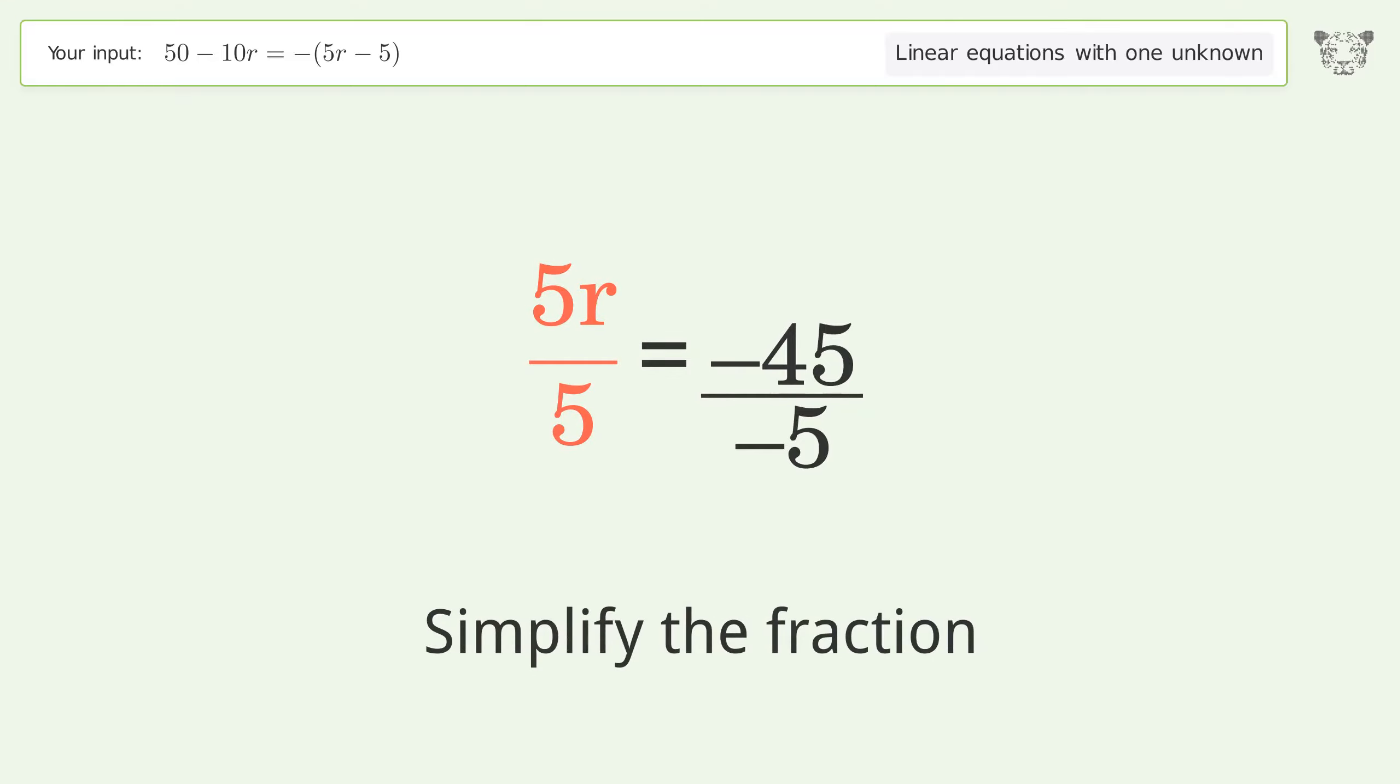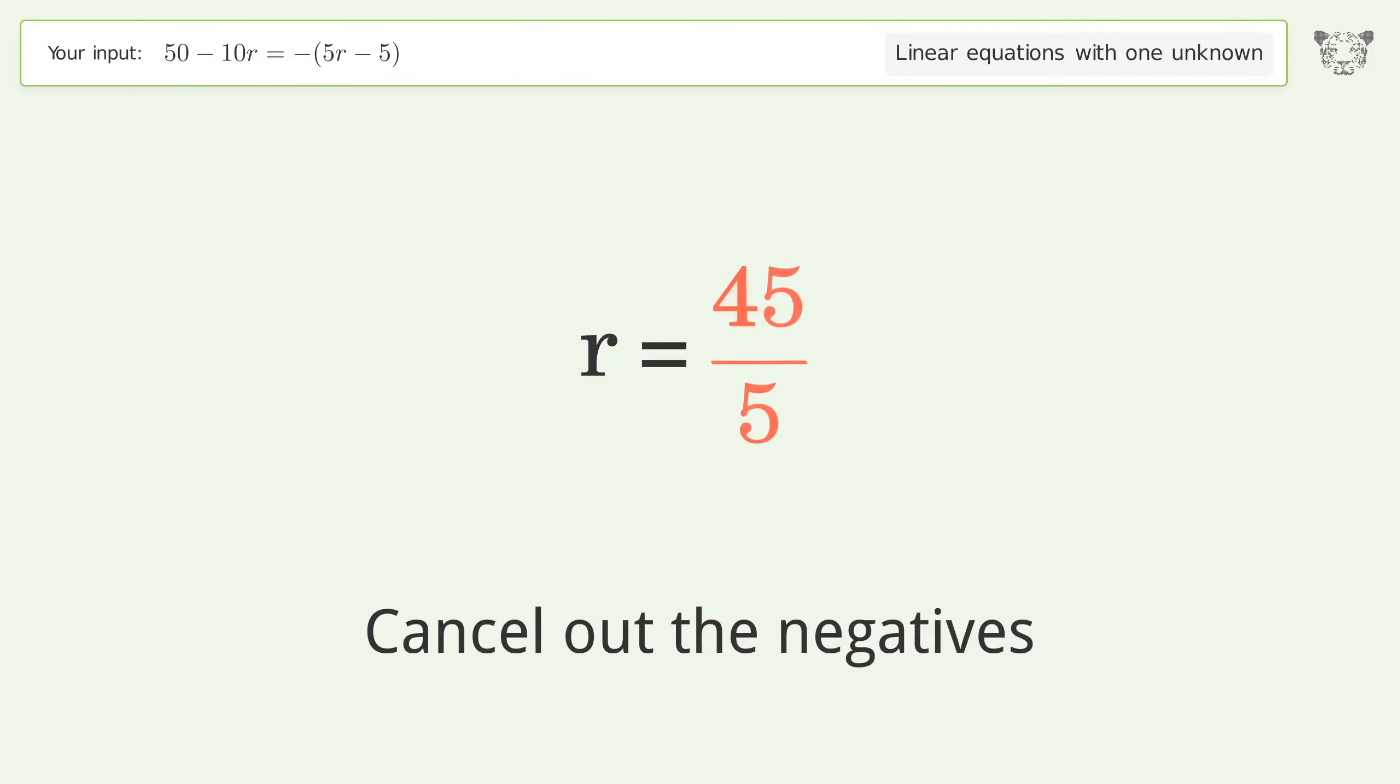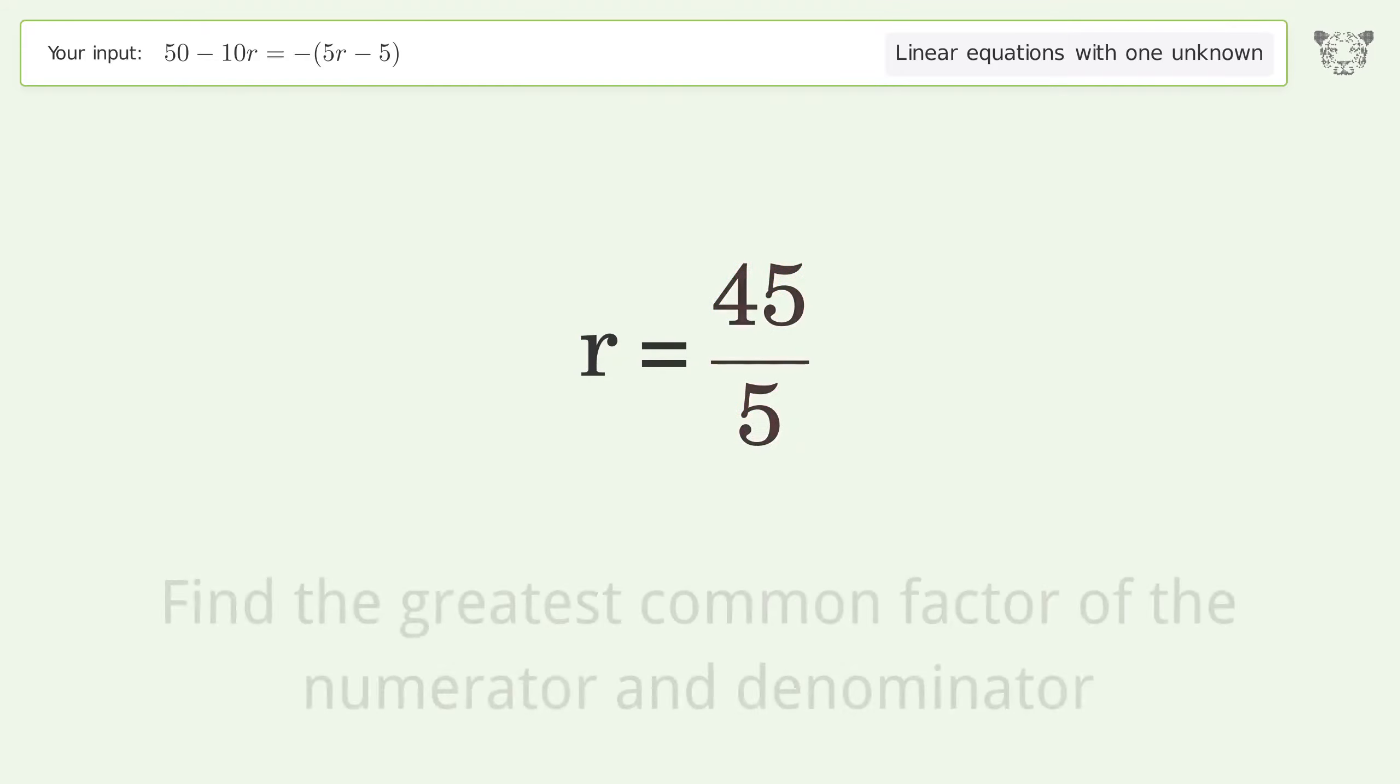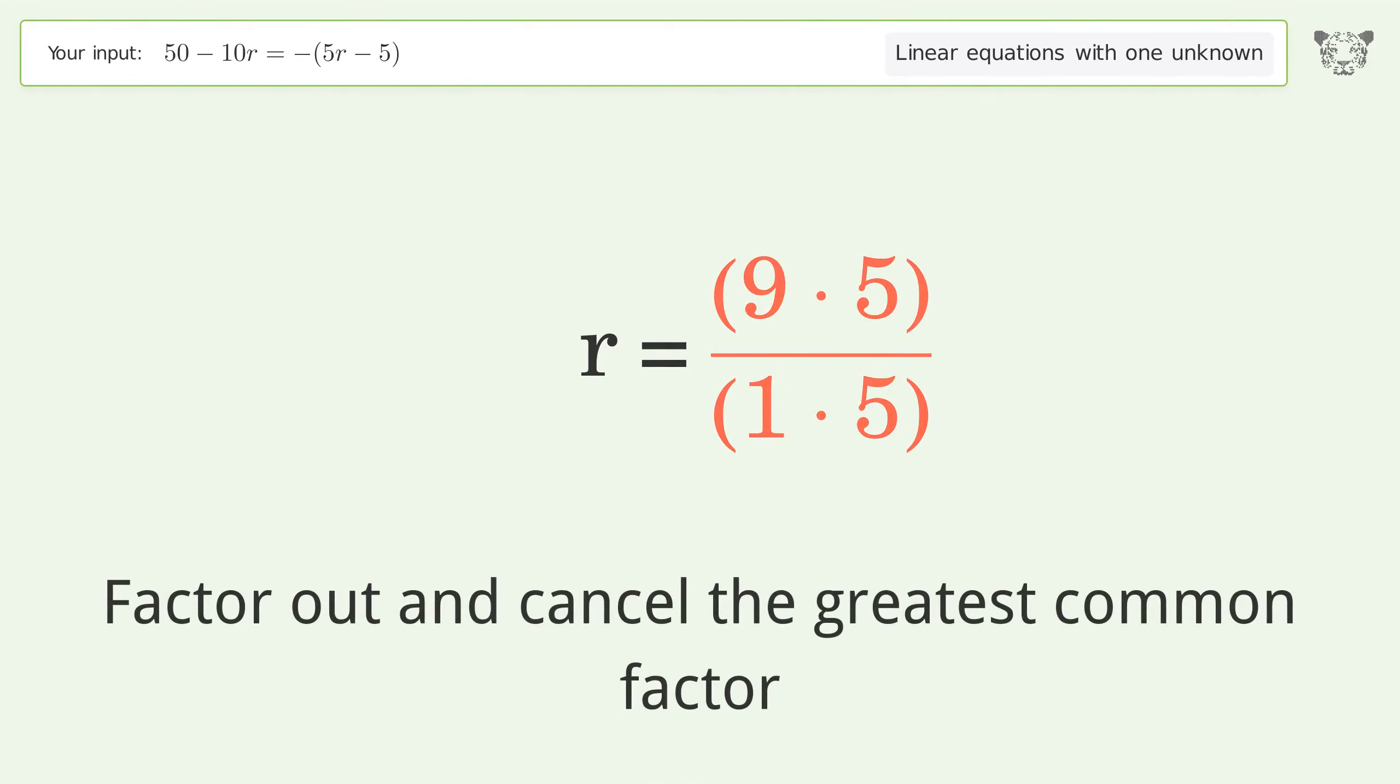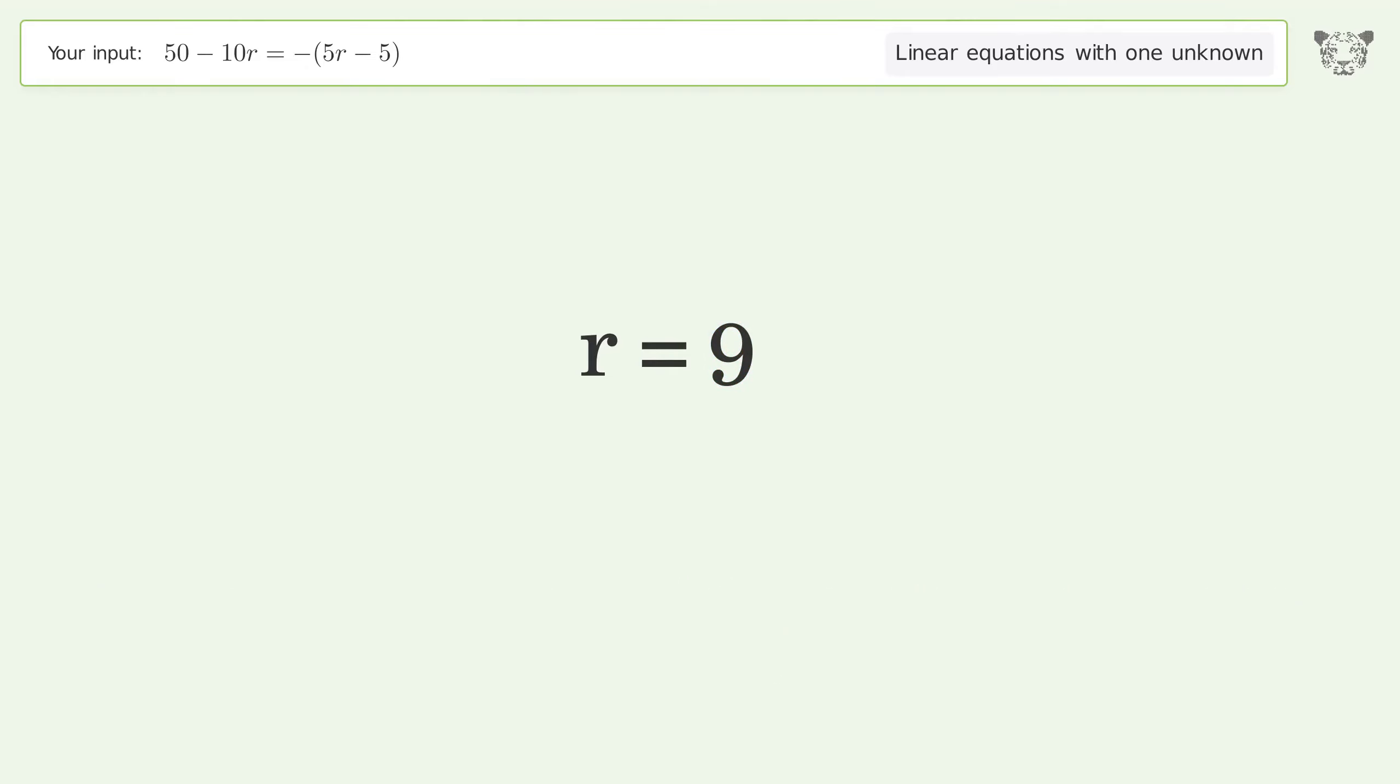Simplify the fraction. Cancel out the negatives. Find the greatest common factor of the numerator and denominator. Factor out and cancel the greatest common factor. And so the final result is r equals 9.